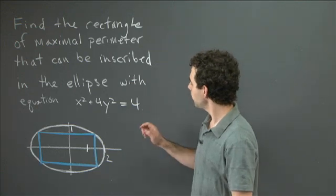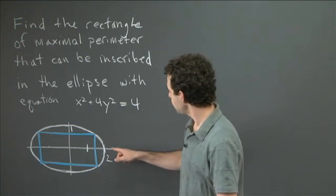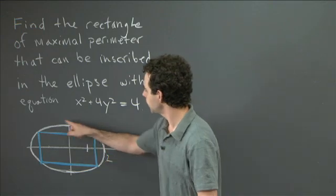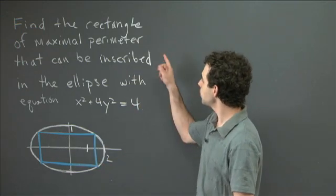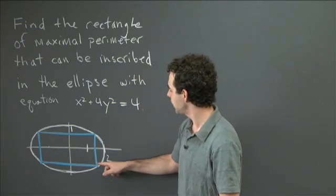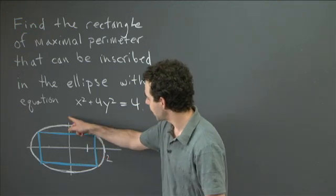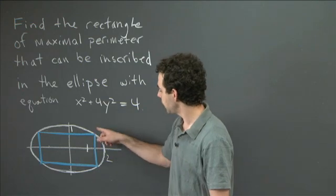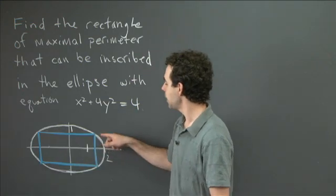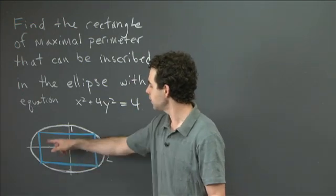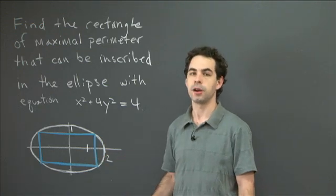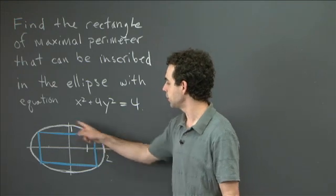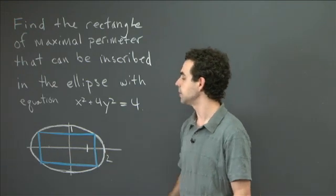In this problem, we've got an ellipse — the ellipse with equation x squared plus 4y squared equals 4. We want to inscribe a rectangle in it, specifically a rectangle whose edges are parallel to the axes. Among all such rectangles, we want to find the one with the largest perimeter — the maximal perimeter of a rectangle that can be inscribed in this ellipse.